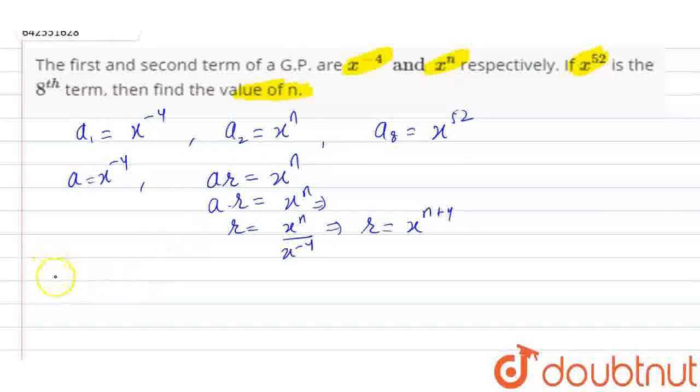So now we know that the 8th term a₈ is equal to a into r to the power 7. That is, the value of a is x to the power minus 4, the value of r is x to the power n plus 4 into 7, is equal to x to the power 52.